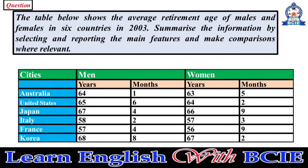The table below shows the average retirement age of males and females in six countries in 2003. Summarize the information by selecting and reporting the main features and make comparisons where relevant.